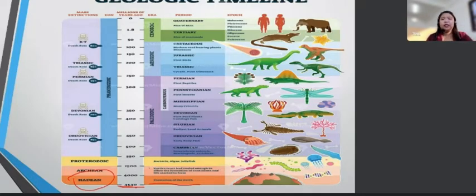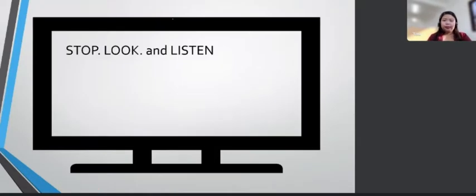And then until such time that it developed going upward. Okay? If you can see, years ago, why is this zero? Because this is our current and present time. We're in what is known as the Cenozoic era, under Quaternary, there is the rise of the men. Next. Okay. Stop, look, and listen.